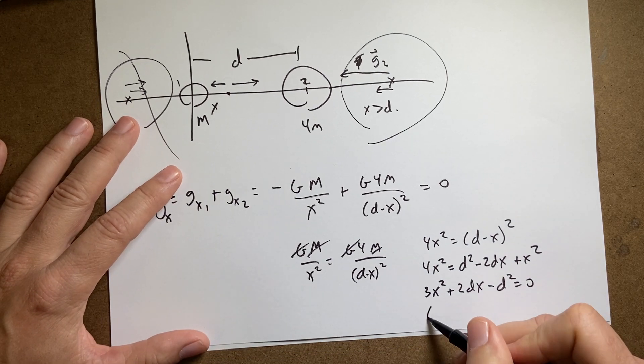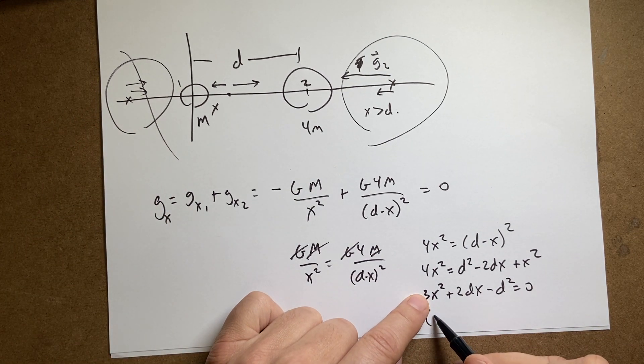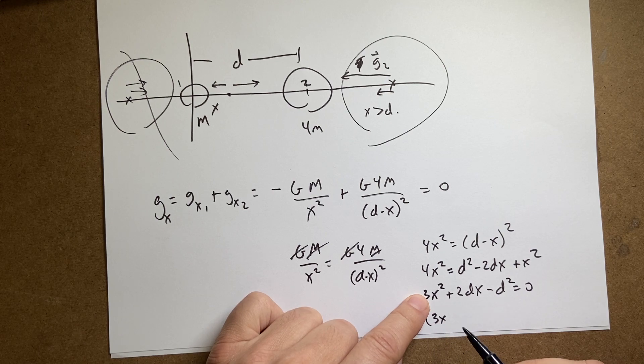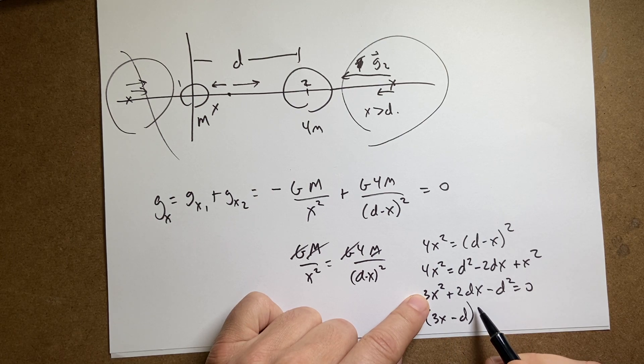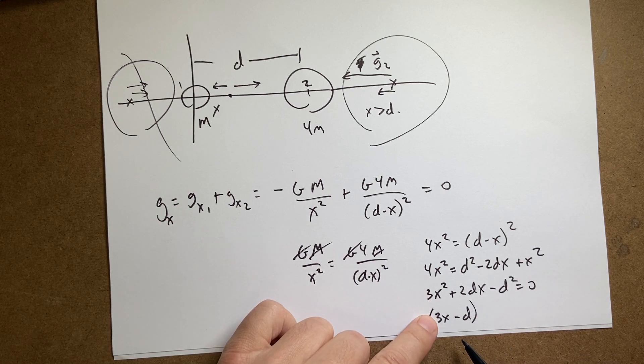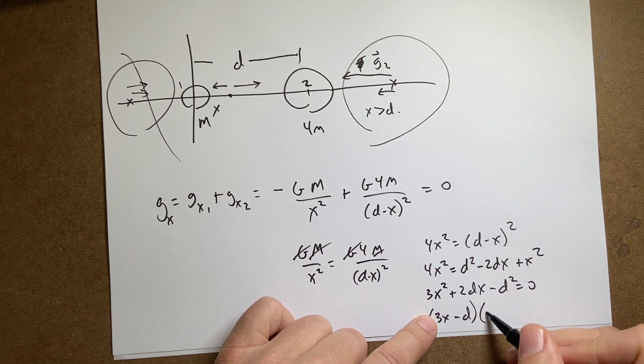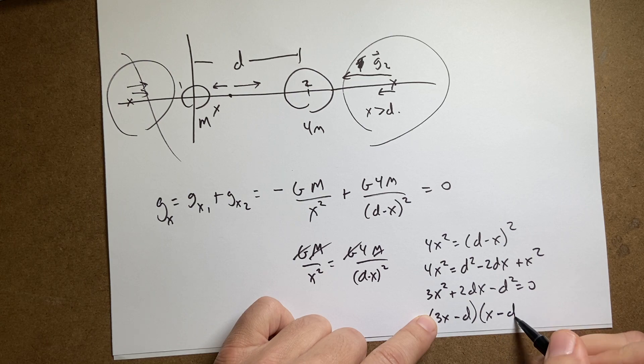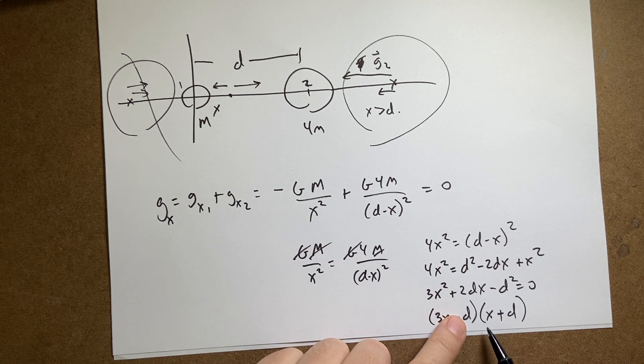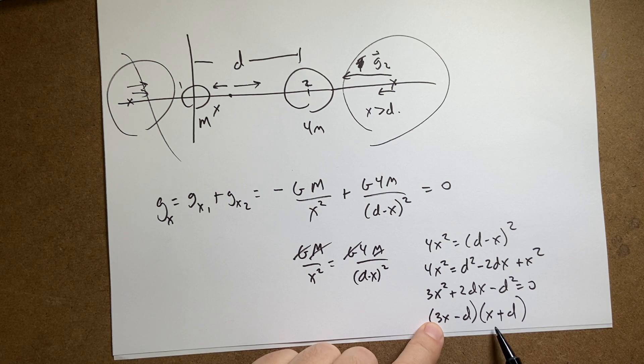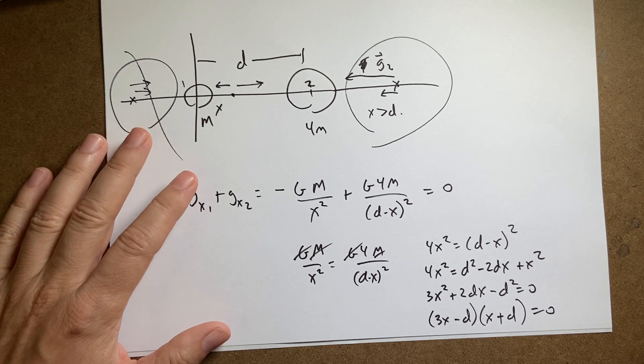Let's just move everything to one side and I get 3x squared plus 2dx minus d squared equals zero. And so you could probably factor this. Let's say 3x minus, I'm just guessing here, minus d squared. Is that right? So I get, no, times x minus d plus d. I think that's right. So I get 3x squared. I get 3x, yeah. Yeah, I did it. I factored it. You could just use a quadratic equation.